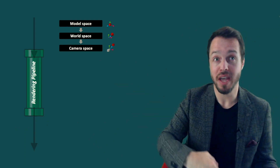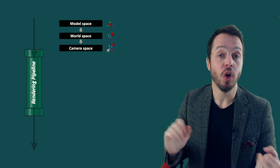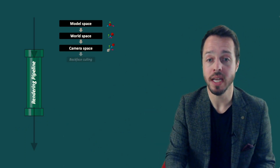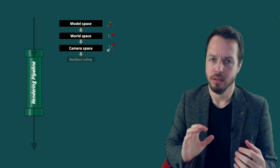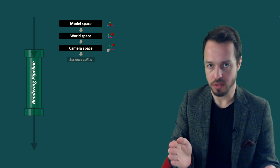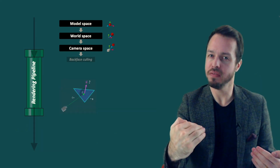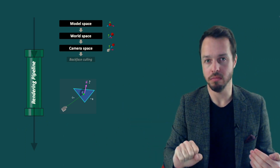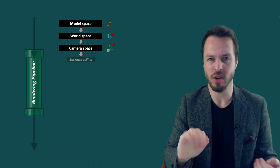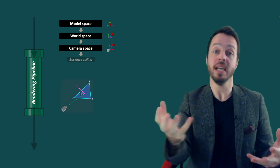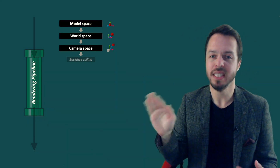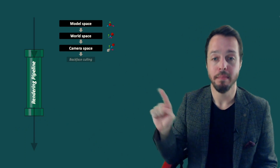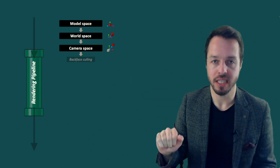Now we have everything in camera space. One thing that most graphics pipelines implement — and that we implement in our course — is backface culling. In summary, backface culling means we look at all the triangles: if a triangle is facing away from the camera, we discard and cull it — we don't need to render it. But if the triangle is facing towards the camera, we keep it and continue rendering that polygon. In a nutshell, backface culling removes triangles that are looking away from the camera. I like to do this after the camera transformation.